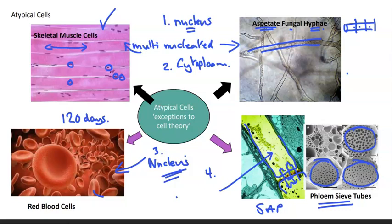Curiously, the sap can move in possibly opposite directions — the phloem is able to reverse the direction of movement of the sap. So these four examples significantly challenge our common understanding of simple cell structure.